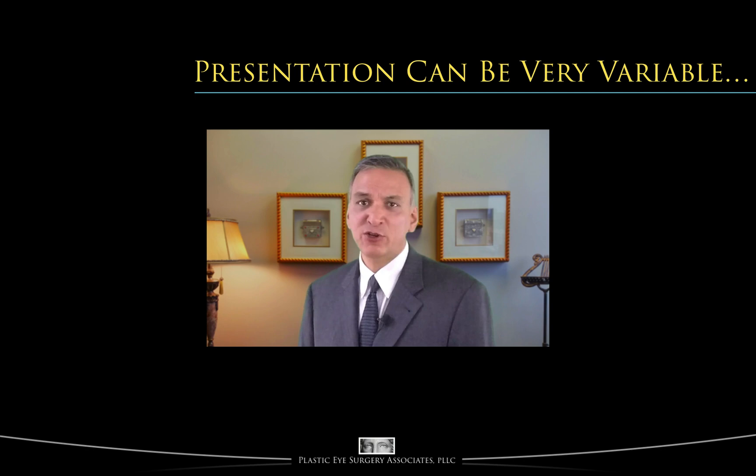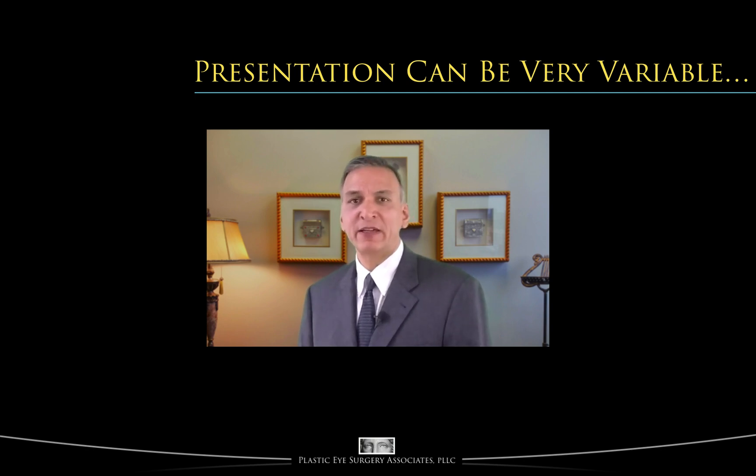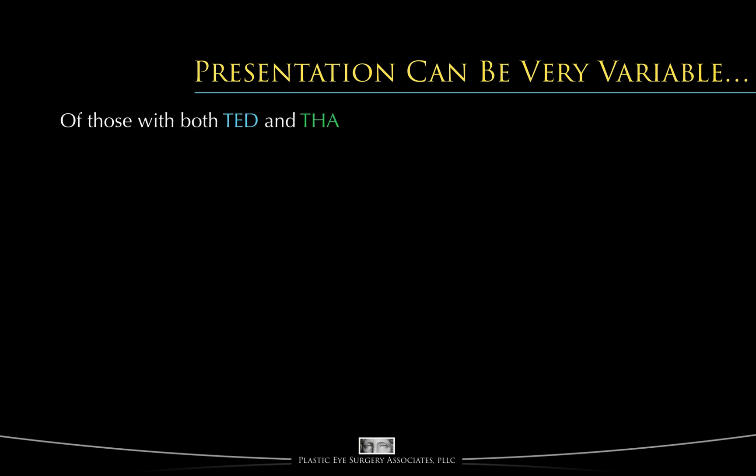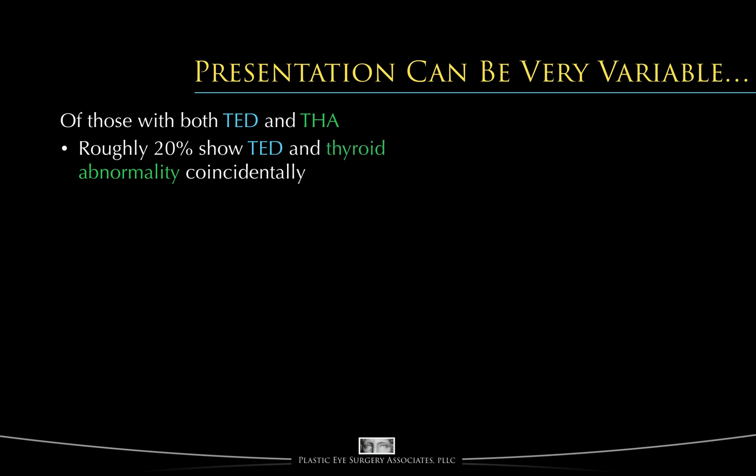The temporal presentation or timing of THA and TED can be very variable. Of those people who have both thyroid eye disease and THA, roughly 20% are found to have TED and abnormal thyroid hormone blood levels at the same time. Roughly 60%, or just over half, will show TED and abnormal thyroid hormone blood levels within a year of one another. So if a person is diagnosed with either high or low thyroid based upon a blood test, and that person has at least a 30% chance of developing thyroid eye disease, with a 60% chance of doing so within the first year, that means an abnormal T3, T4, or TSH blood test gives that person at least an 18% — or almost 1 in 5 — chance of developing thyroid eye disease within a year, and they might thus wish to have at least one eye examination within that period.